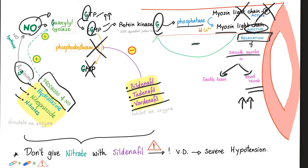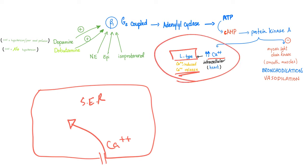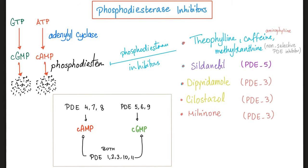Remember the L-type calcium channel in your heart, which is responsible for increasing cardiac contractility through calcium-induced calcium release from the sarcoplasmic reticulum. What drugs can boost contractility? Dopamine, dobutamine, epinephrine, isoproterenol. The same phosphodiesterase enzyme is responsible for breaking down both cyclic AMP and cyclic GMP.